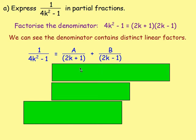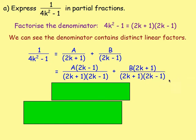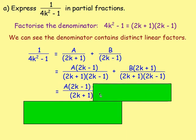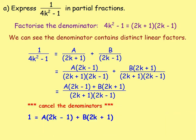We need (2k + 1)(2k − 1) as the common denominator. For the A term, we multiply numerator and denominator by (2k − 1); for the B term, we multiply by (2k + 1). The denominators are now the same, so we can cancel them, leaving us with 1 = A(2k − 1) + B(2k + 1).